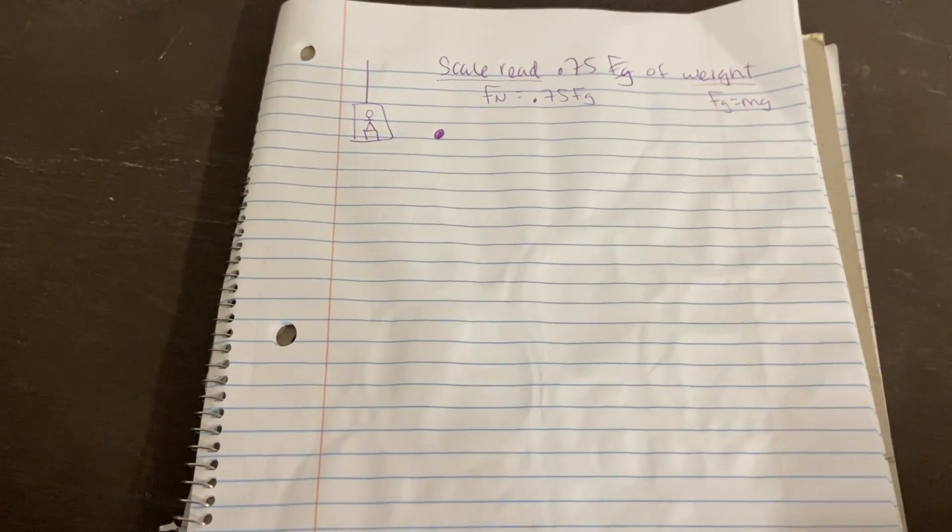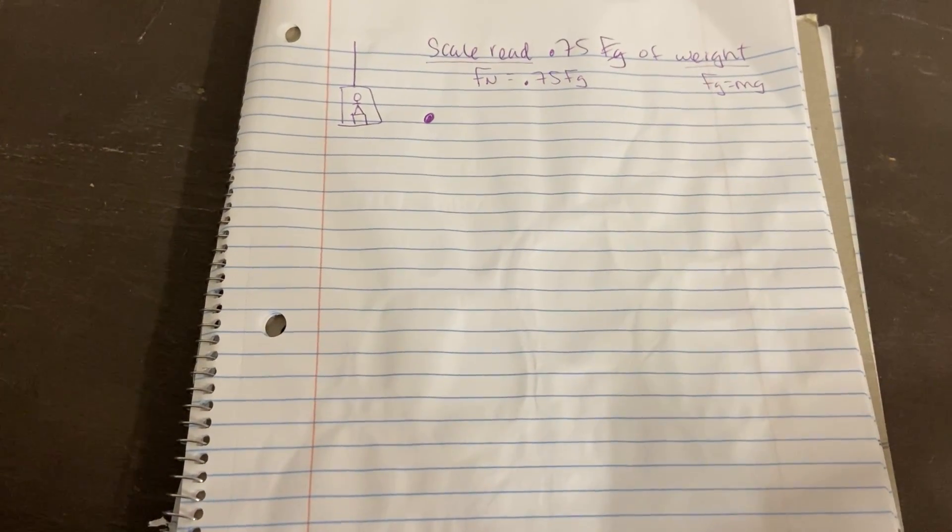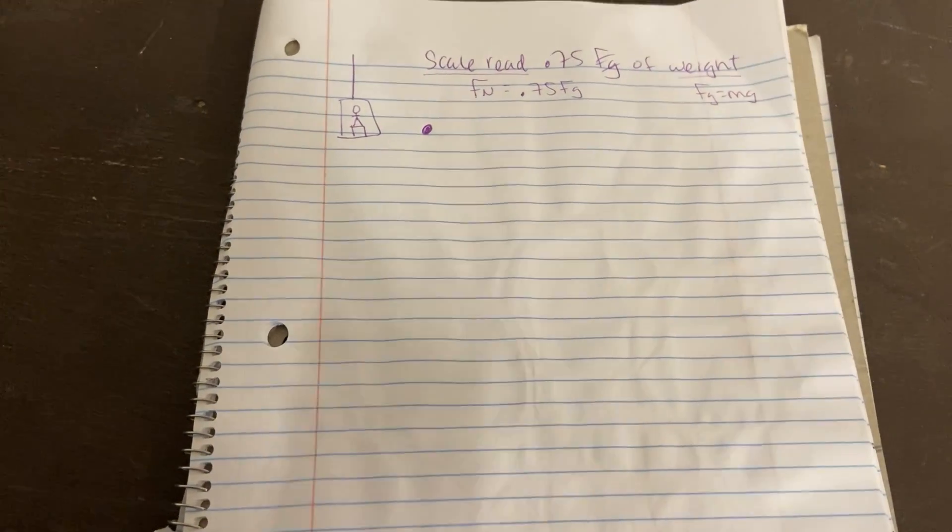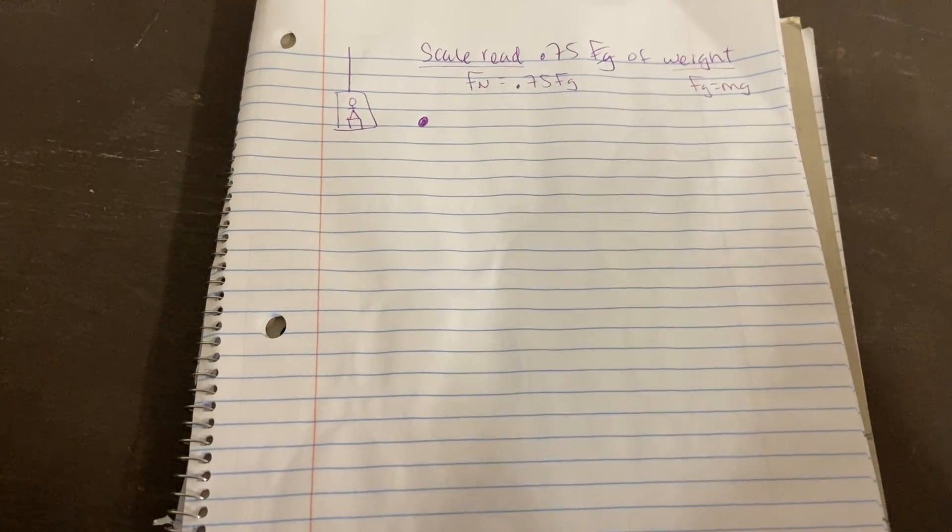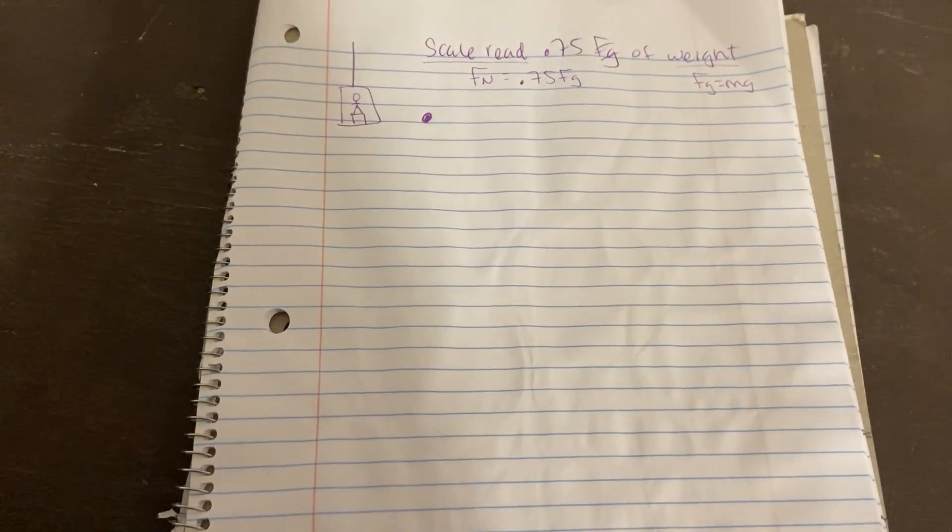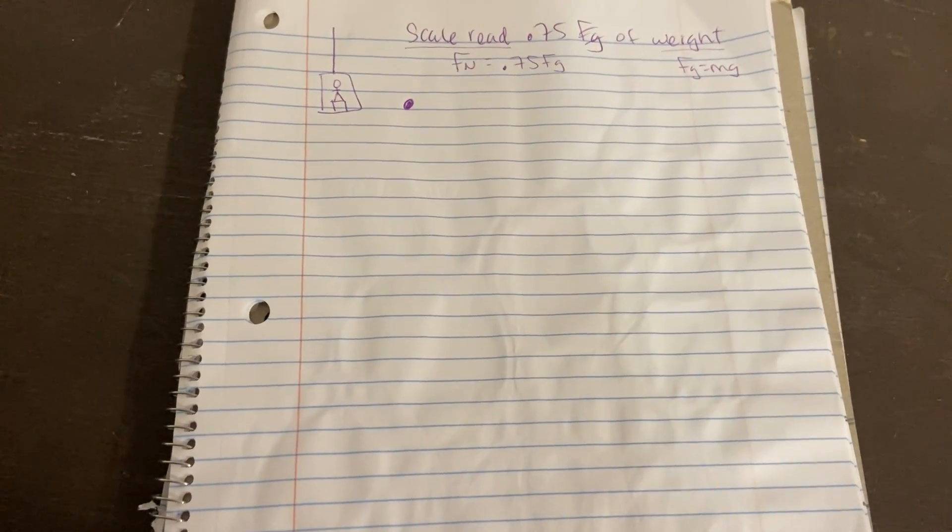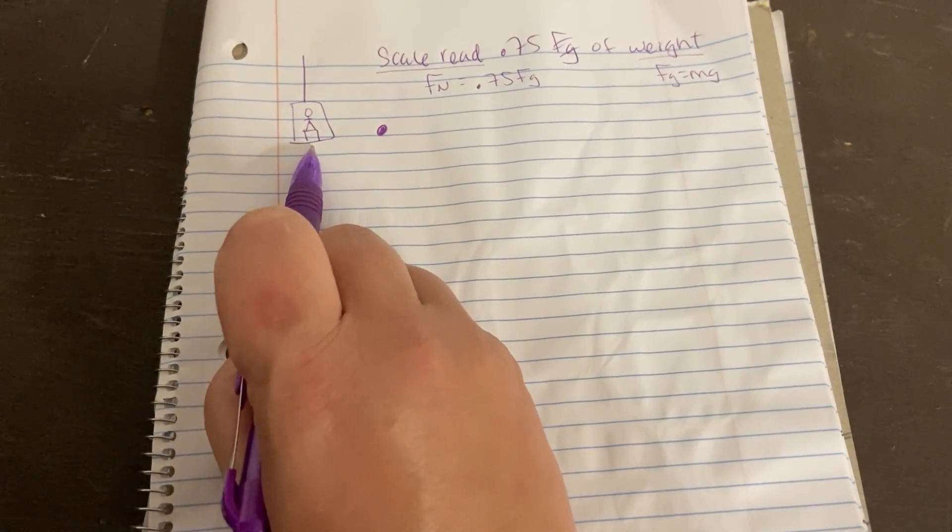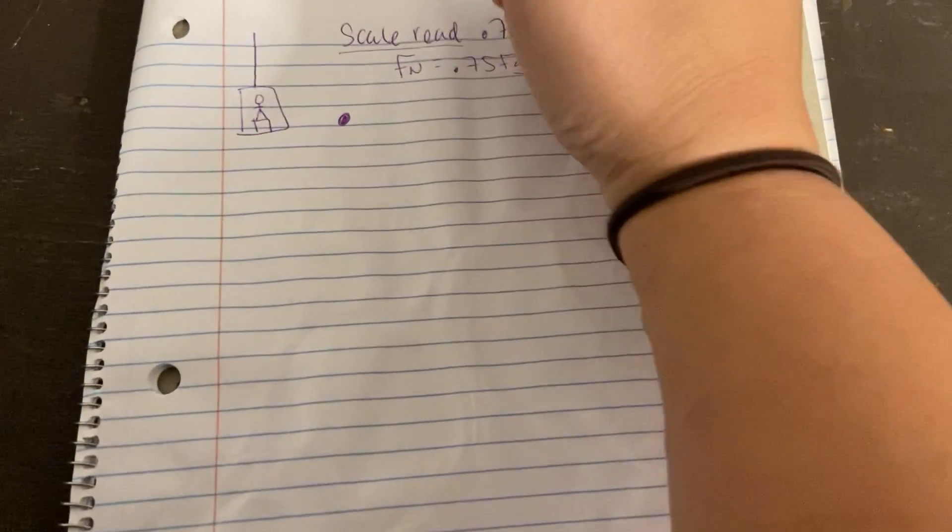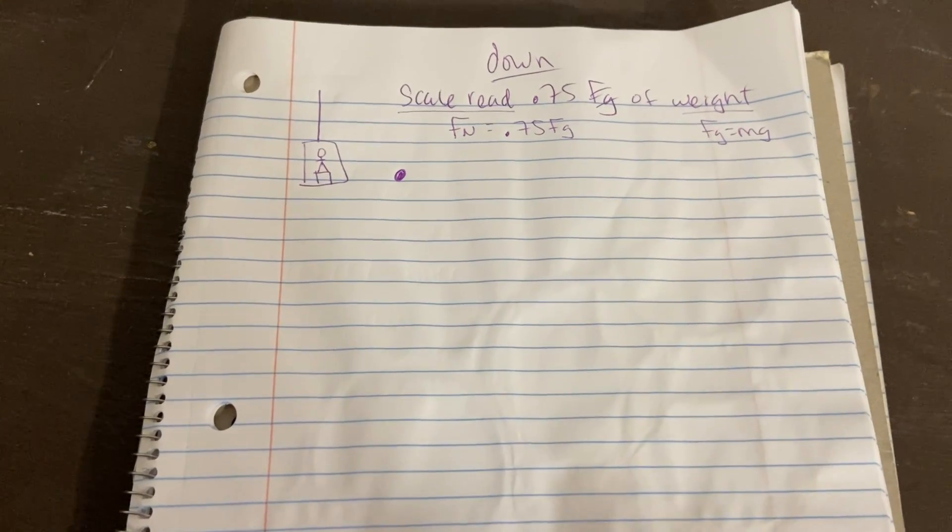Now, it says that the first thing it asks you before to even calculate acceleration is use your common sense and figure out whether or not you're moving up or down, accelerating upwards or downwards. So if you actually are weighing less, the scale is saying that you weigh less. That means the scale is falling out from under your feet. You're not pushing into it quite so hard. If it was going upwards, it would be pushing up on your feet and the scale would actually read more. So intuitively, hopefully you can kind of guess that this thing is going downwards. It's accelerating downwards. And that should match with the math of our problem.